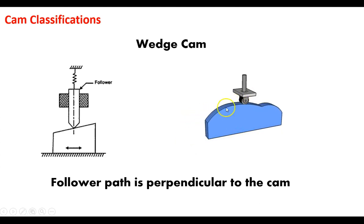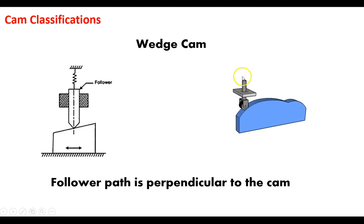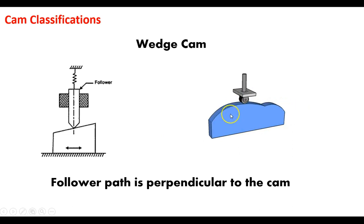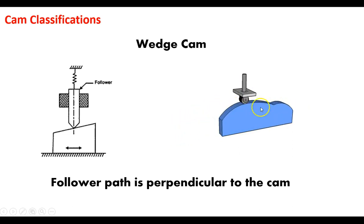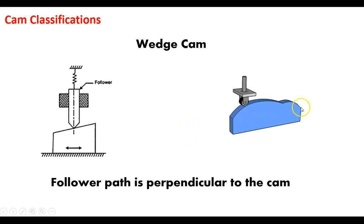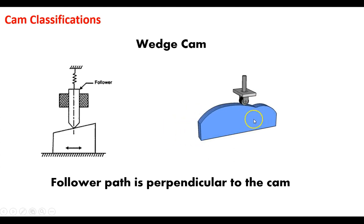The cam travels back and forth and the pattern within this cam gives you that up and down motion. As you can see in this animation, the height of the follower can take on any number of paths — a larger hump going to a max height, then down to a dip, then rising slightly again, then all the way down to another drop.